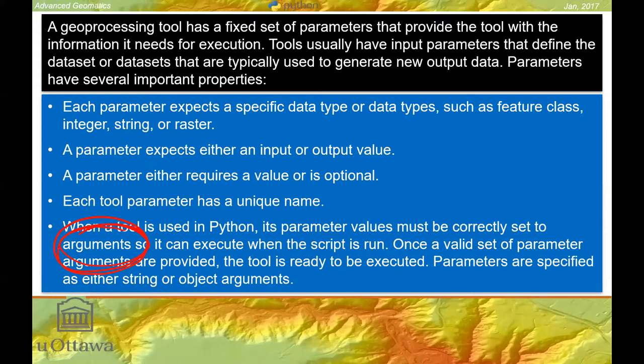When a tool is used in Python, its parameter values must be correctly set to what we call arguments. Arguments are the things we send in place of the parameter names — for example, in_features or clip_features — and we set those to a specific feature layer or feature class. Once a valid set of parameter arguments are provided, the tool will be executable. Parameters are specified either as string or object arguments.